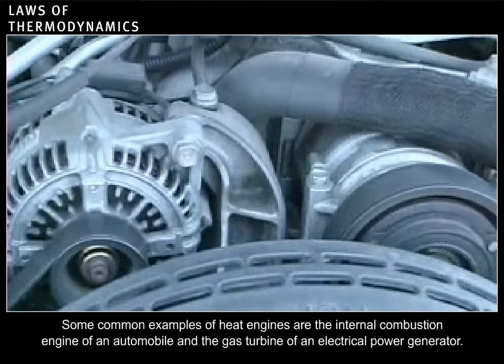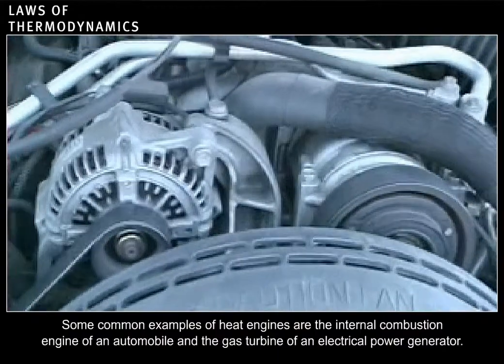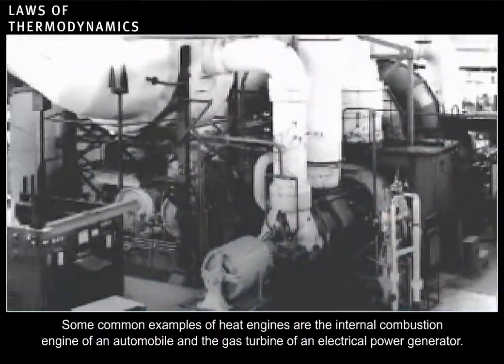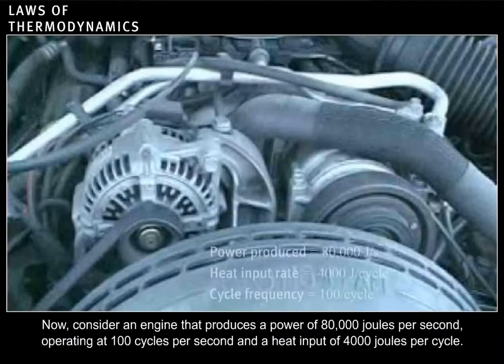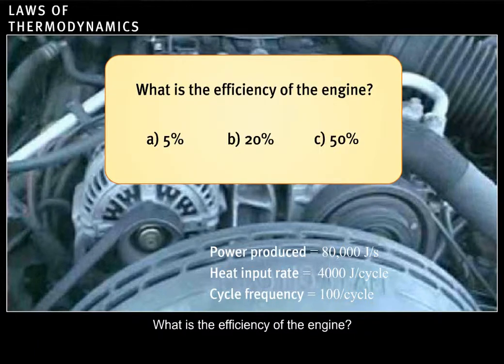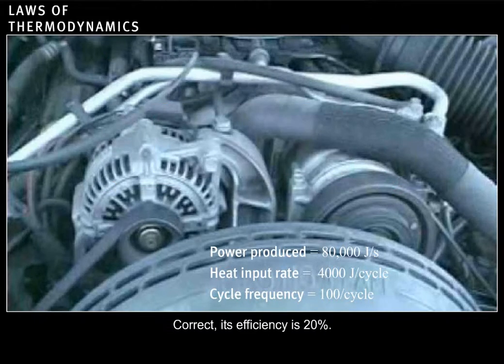Some common examples of heat engines are the internal combustion engine of an automobile and the gas turbine of an electrical power generator. Now consider an engine that produces a power of 80,000 joules per second, operating at 100 cycles per second, and a heat input of 4,000 joules per cycle. What is the efficiency of the engine? Correct. Its efficiency is 20%.